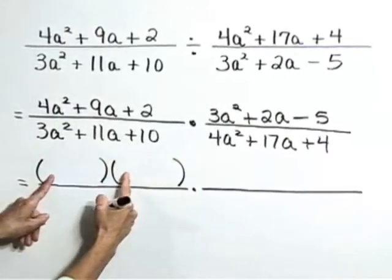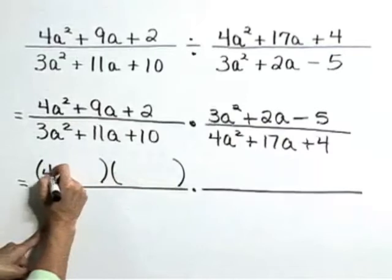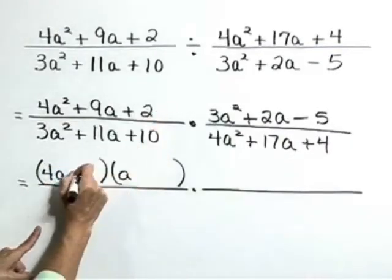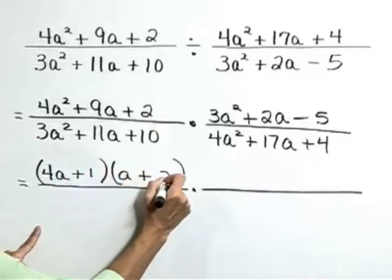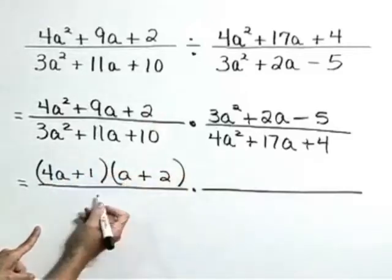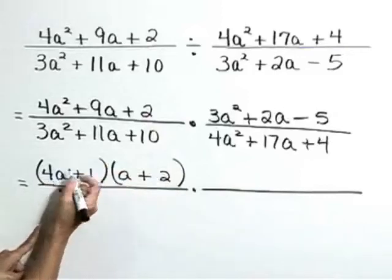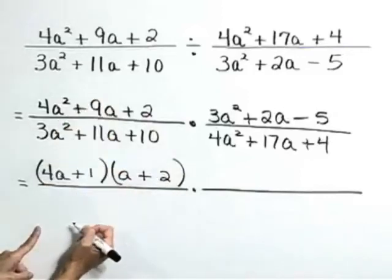Our leading terms in here are going to be 4a and a. Now we want our factors of 2 in the correct places. Let's use a plus 1 and a plus 2 and check our inner and outer products. 1a plus 8a is equal to that middle term of 9a, so that's correct.